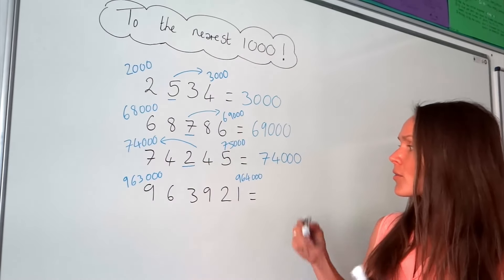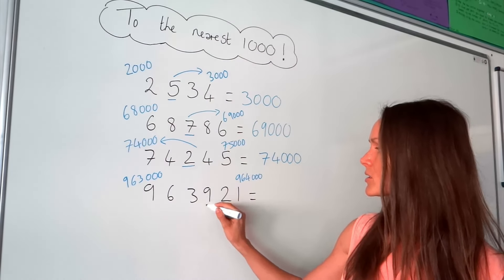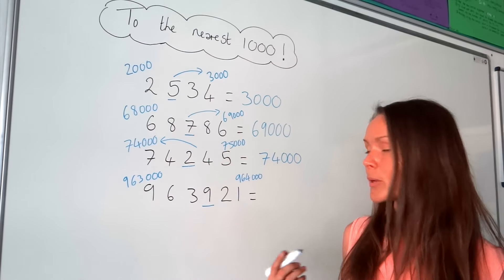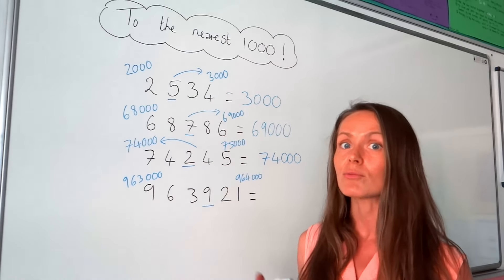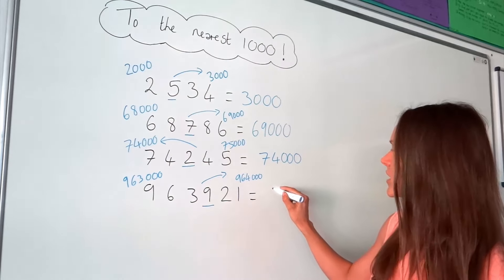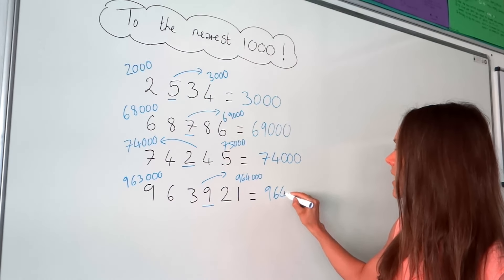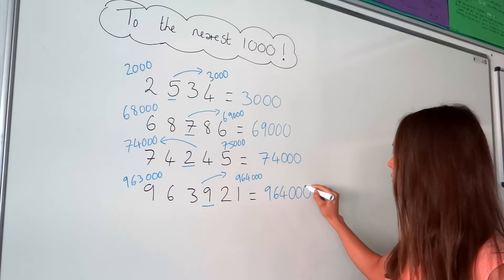So check that third from last digit, so this one here. And it's bigger than 5, so that means we have to round up. So our answer in the last one is 964,000.